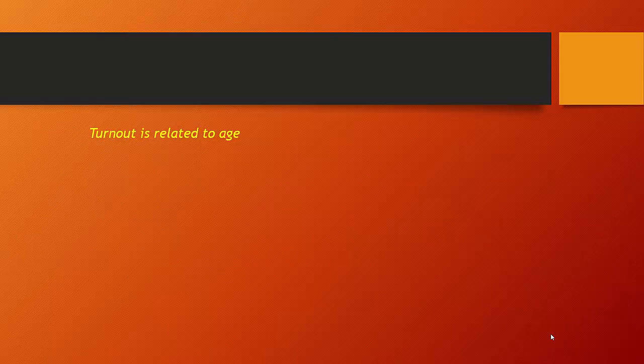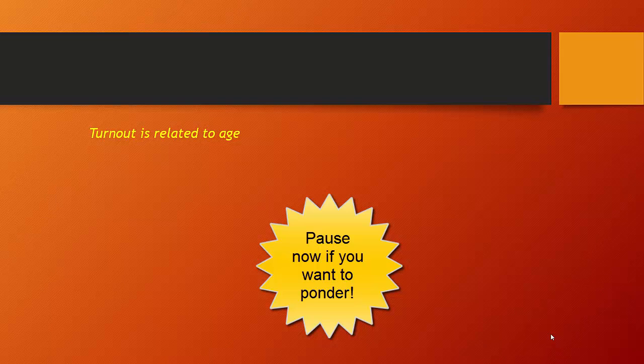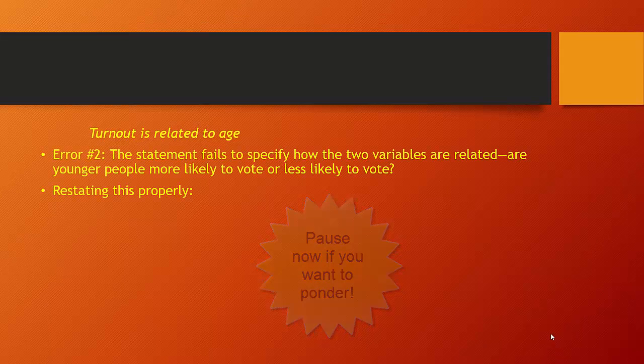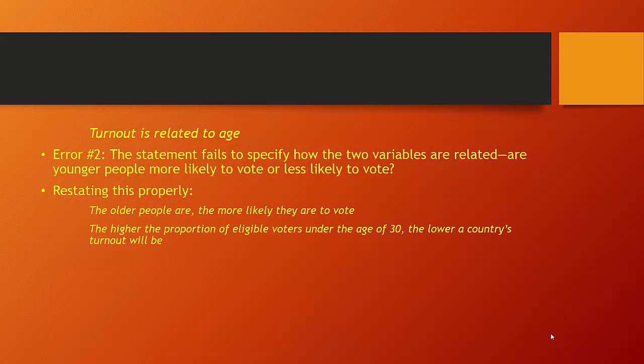How about this one: 'Turnout is related to age.' The error here is it fails to specify how these two variables are related. Remember, a hypothesis is a conjectural statement that specifies a directional relationship between two variables. So you want to ask yourselves: are young people more likely to vote or less likely to vote? For example, the older people get, the more likely they are to vote. Or at a state level: the higher the proportion of eligible voters under the age of 30, the lower a country's turnout.